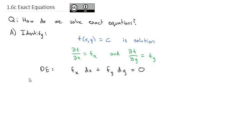If this is the case, it should be really easy to identify. We can take the partial of f with respect to x and take its partial with respect to y. Then we can take the partial of f with respect to y and take its partial with respect to x. What we remember from calculus is that those mixed partials — x then y, or y then x — are actually equal to each other. That's how we identify it is exact. So if we suspect we have an exact equation, we take the partial of the dx part with respect to y, and the partial of the dy part with respect to x. If those give us the same function, we have an exact equation.